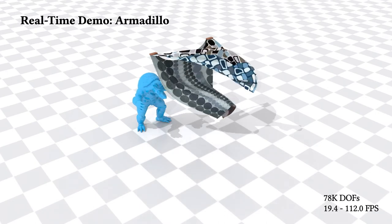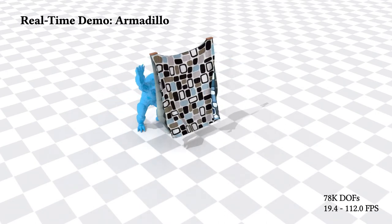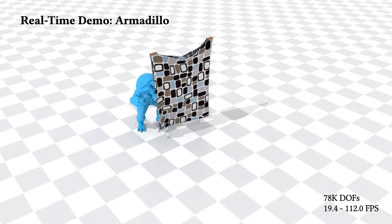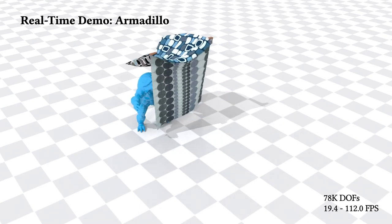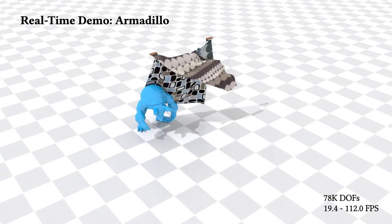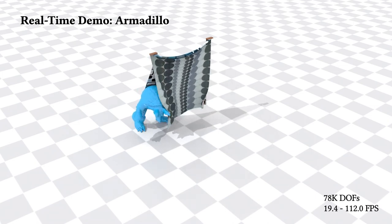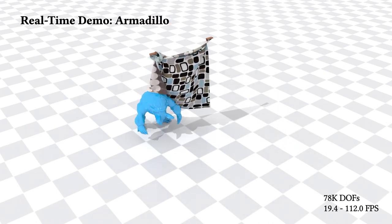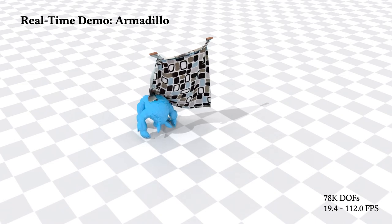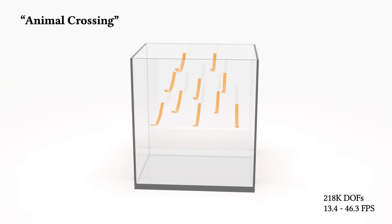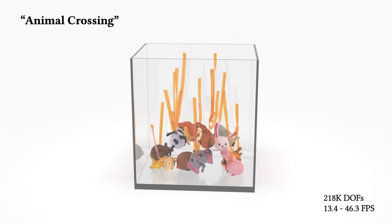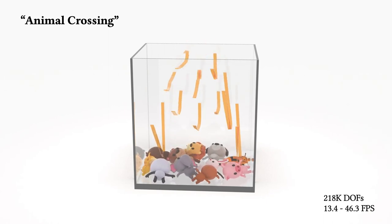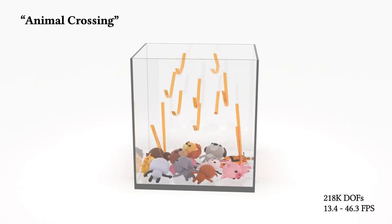Our method is able to couple cloth and volumetric bodies in real-time with a vast number of contacting elements and large deformation. Here we drop a group of animals into a container with thin elastic bands in the middle. With a large time step and severe stretching on the band, our method still guarantees non-interpenetration in an efficient manner.